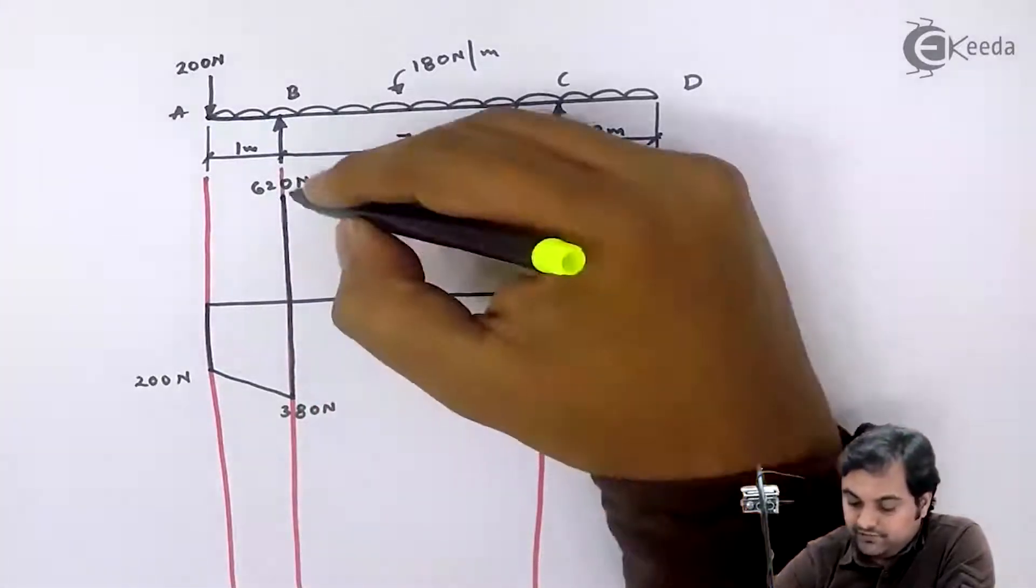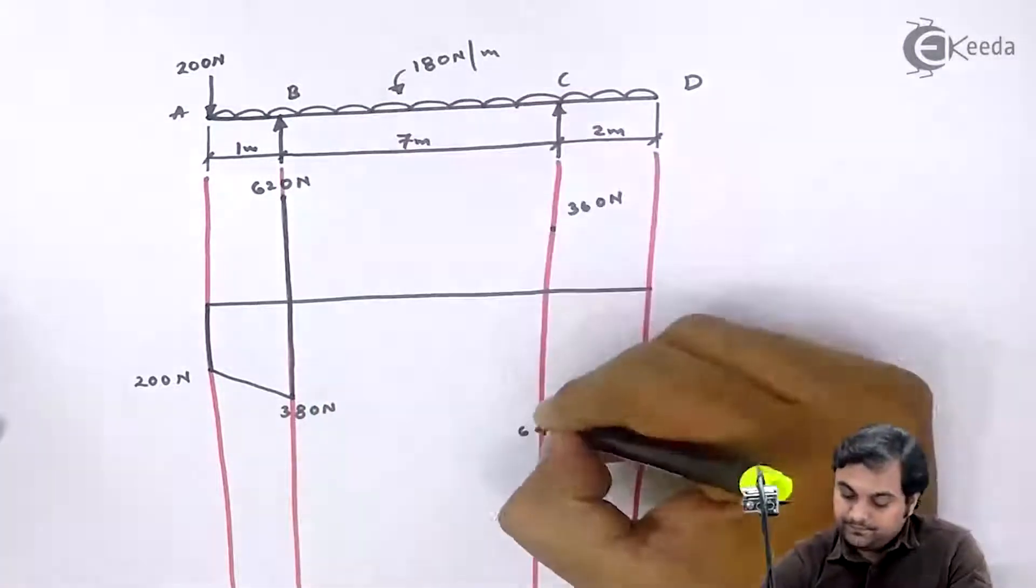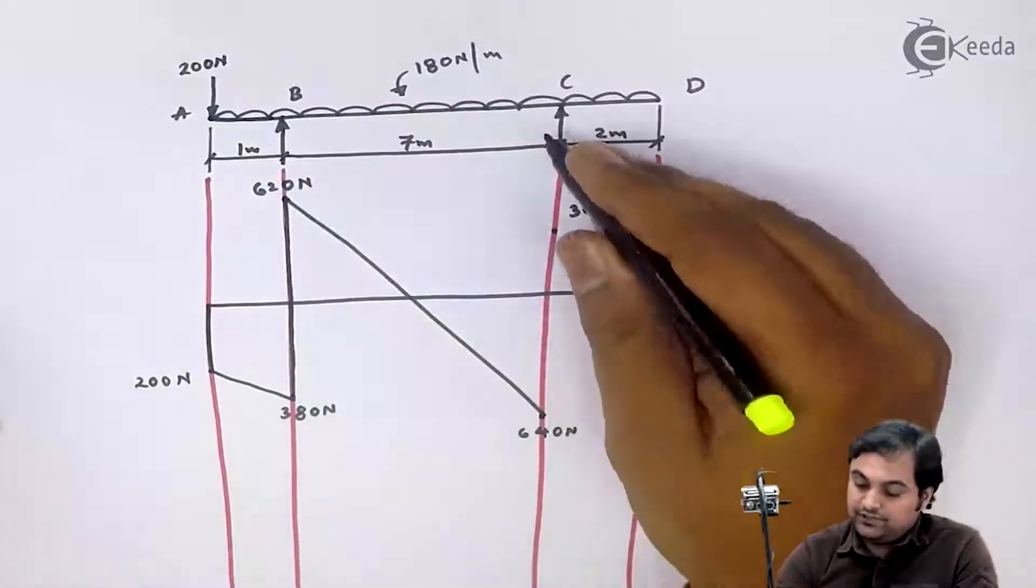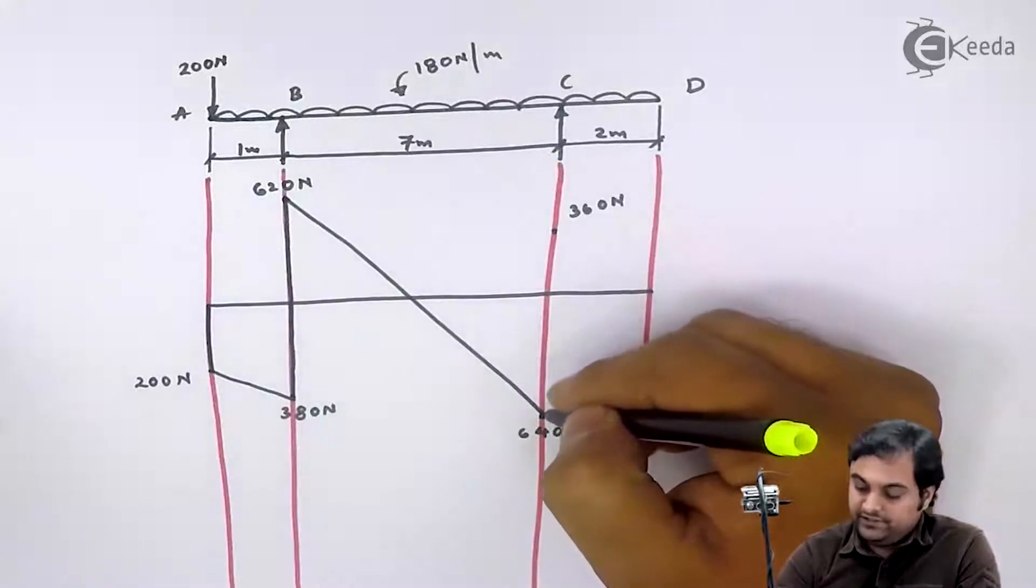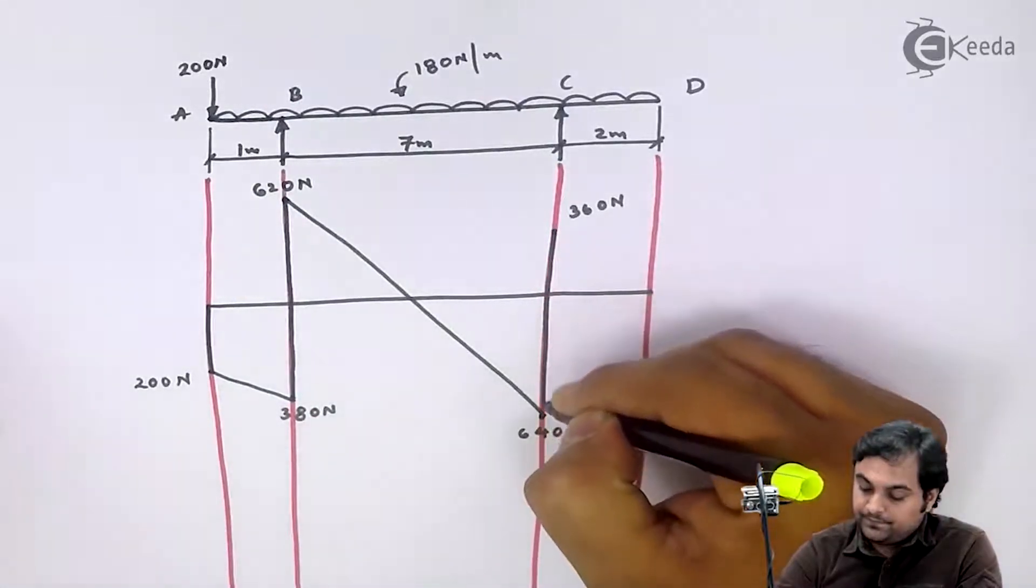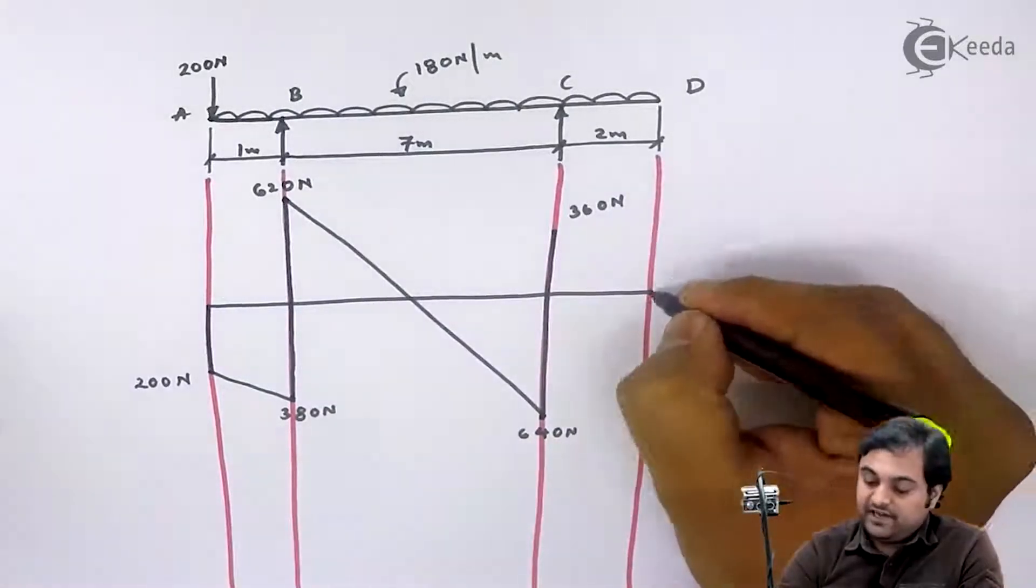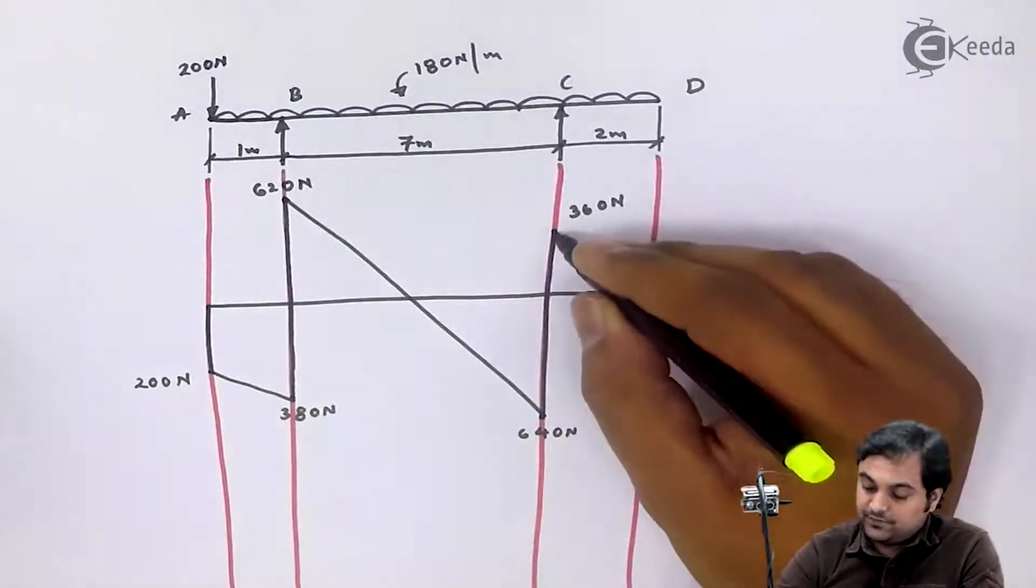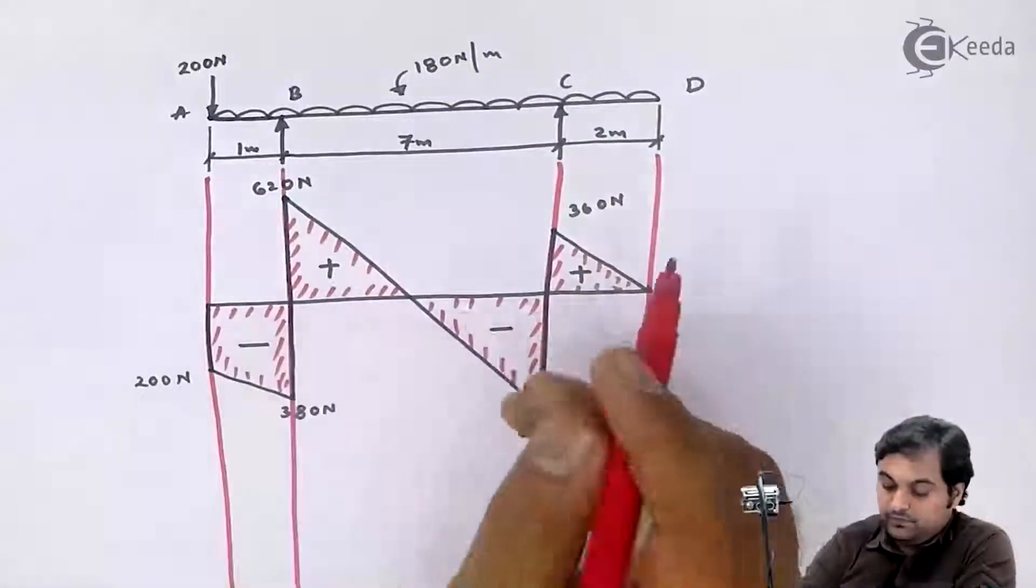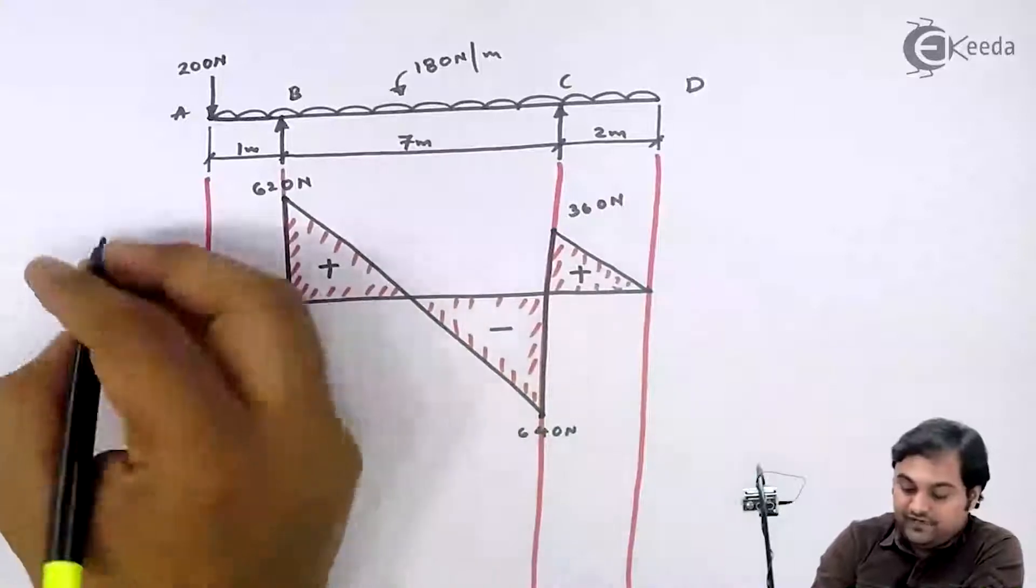So here I would be having an inclined line. Next, shear force at C, I have two values. It increases from 640 to 360, and finally at point D the shear force is zero. So this is the shear force diagram which we have.